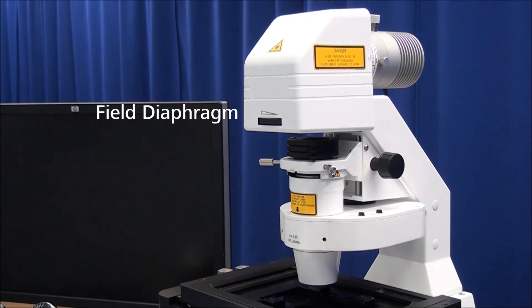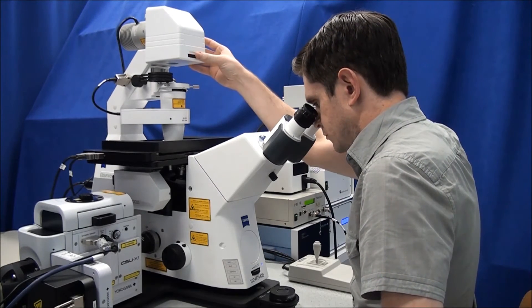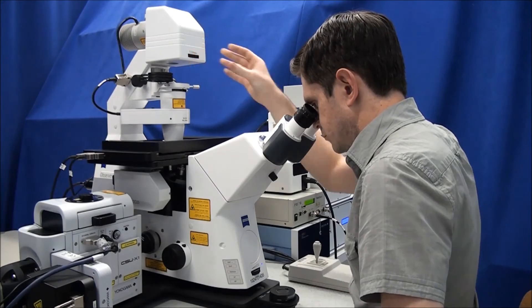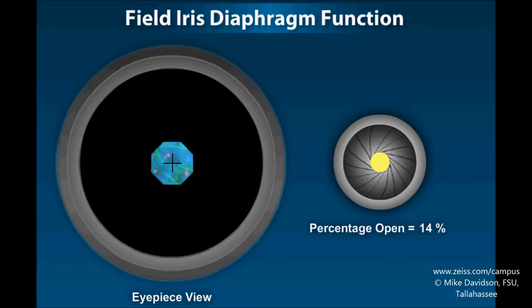Relocate the field diaphragm. While looking through the eyepieces, roll the dial to the right to close the field diaphragm until the blades, in focus or not, come into the field of view. The field diaphragm controls the beam diameter of your lighting.